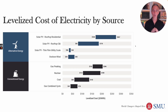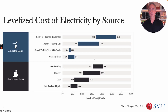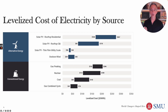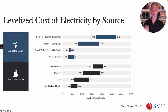Looking at cost per megawatt hour, solar photovoltaic at utility scale — those big solar farms — is one of our cheapest sources of power. Onshore wind is also very cheap. Natural gas can compete some of the time with overlapping cost ranges, but it's very difficult for conventional sources like coal and nuclear power plants to compete on this measure.